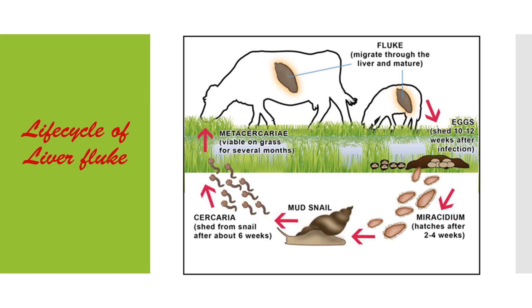Let's discuss the life cycle of liver fluke in brief. It is a digenetic parasite that completes its life cycle in two hosts: cattle or sheep is the primary host and snail is the secondary host. This organism is hermaphrodite — both male and female sex organs are present in the same organism. Sexual reproduction occurs in the liver or bile duct of the primary host. Fertilized eggs come out of the host body along with feces. If this feces is dropped near a water body, free-swimming Miracidia larvae come out of the eggs and infect the snail.